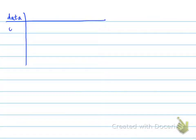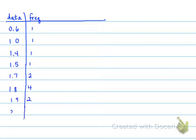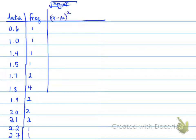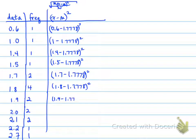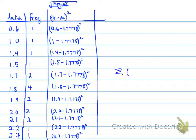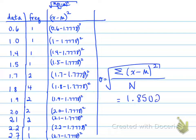To find the standard deviation, take each data value, note how many times it occurs (the frequency), calculate the difference from the mean squared, then multiply by the frequency and sum all those products. That is: take the data value minus the mean, square it, multiply by the frequency, and add them all up. The resulting standard deviation is 0.4361.